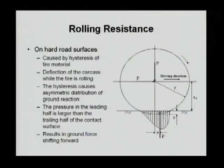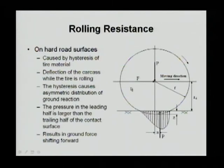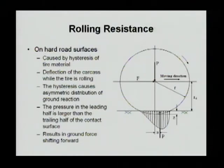The second resistance is rolling resistance, generated because the wheel of a vehicle rolls against the road surface. One scenario is when the vehicle is on a hard road surface. Because tires are not rigid, the tire changes shape. When the tire changes shape, the weight center and the rotation center of the vehicle become different, generating a force whose horizontal projection becomes the rolling resistance.